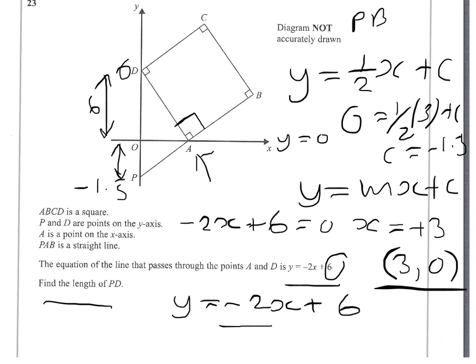It's quite straightforward to get PD now. PD will be 6 plus 1.5. So the answer is 7.5. There are no units given, so we'll leave it at 7.5.